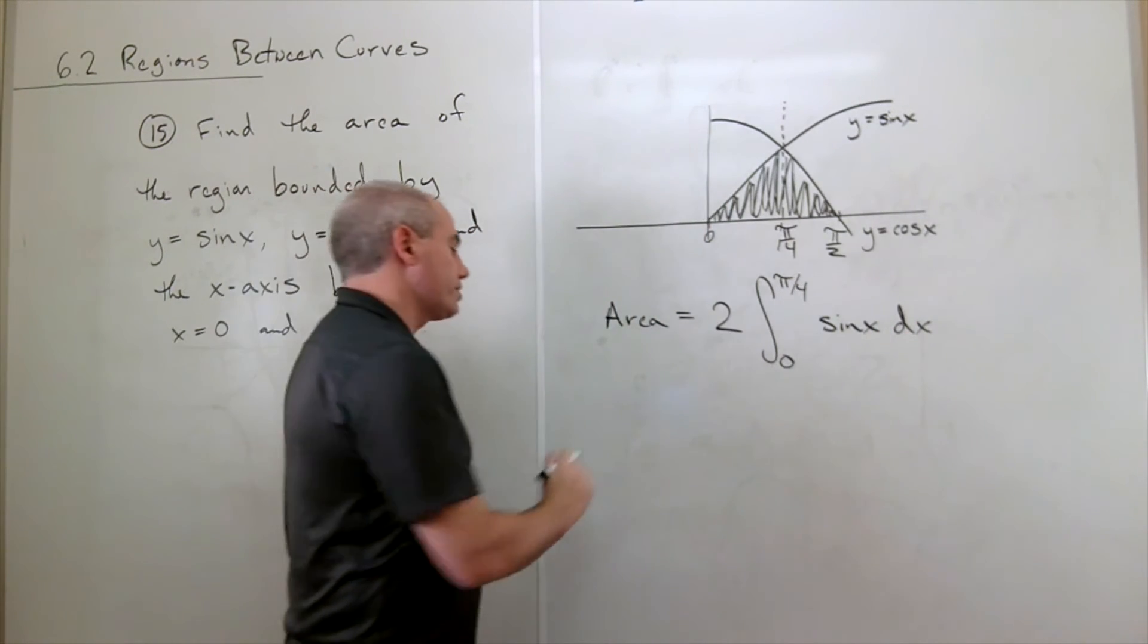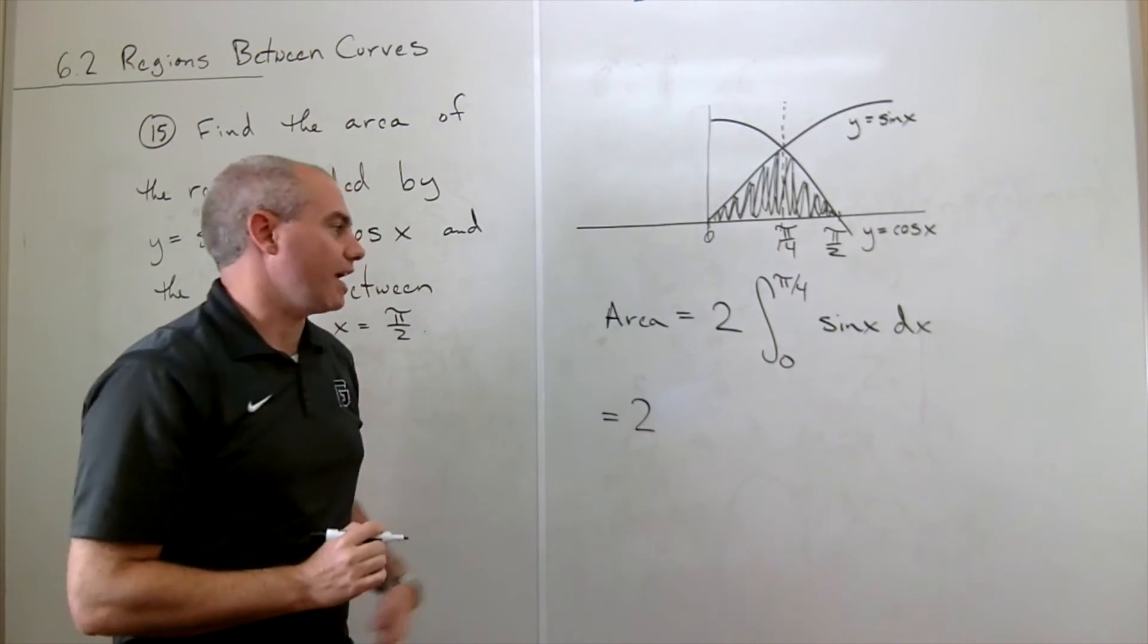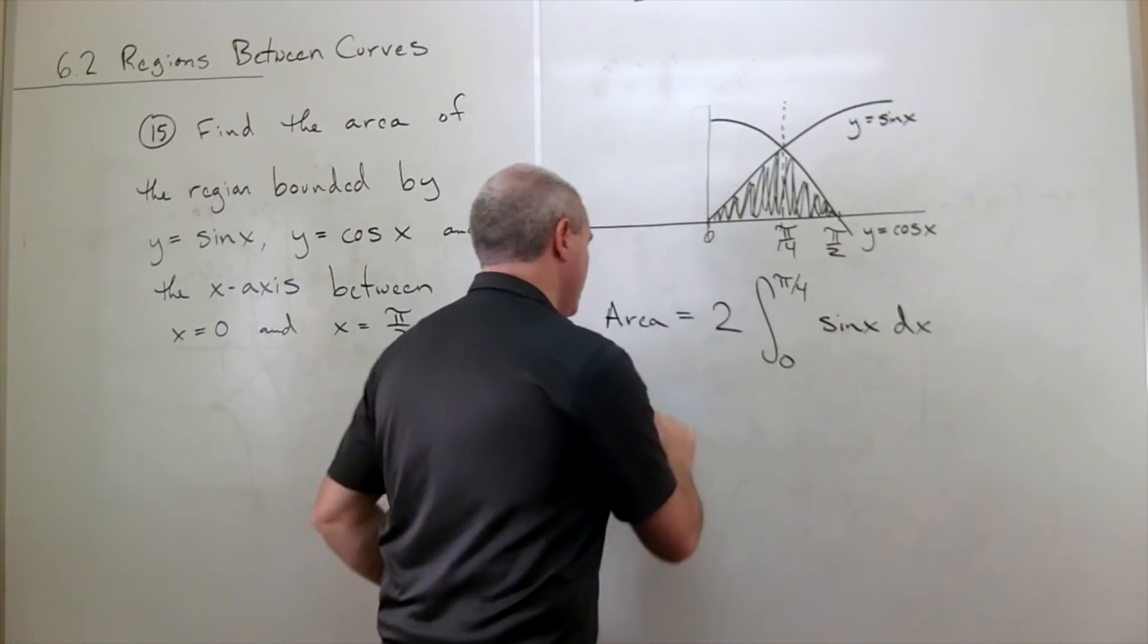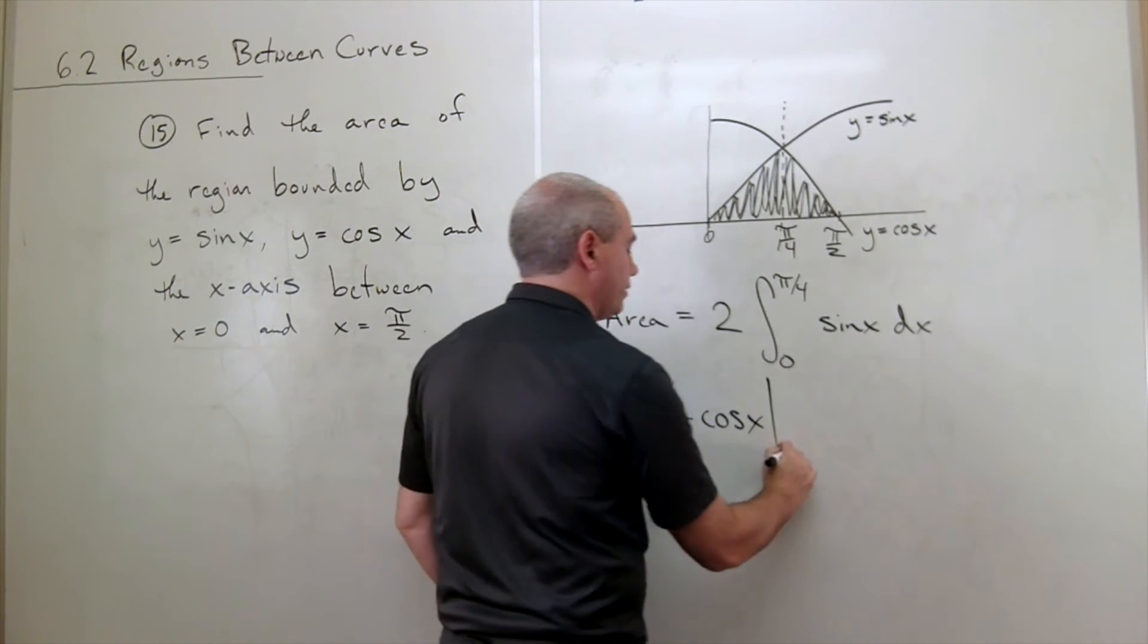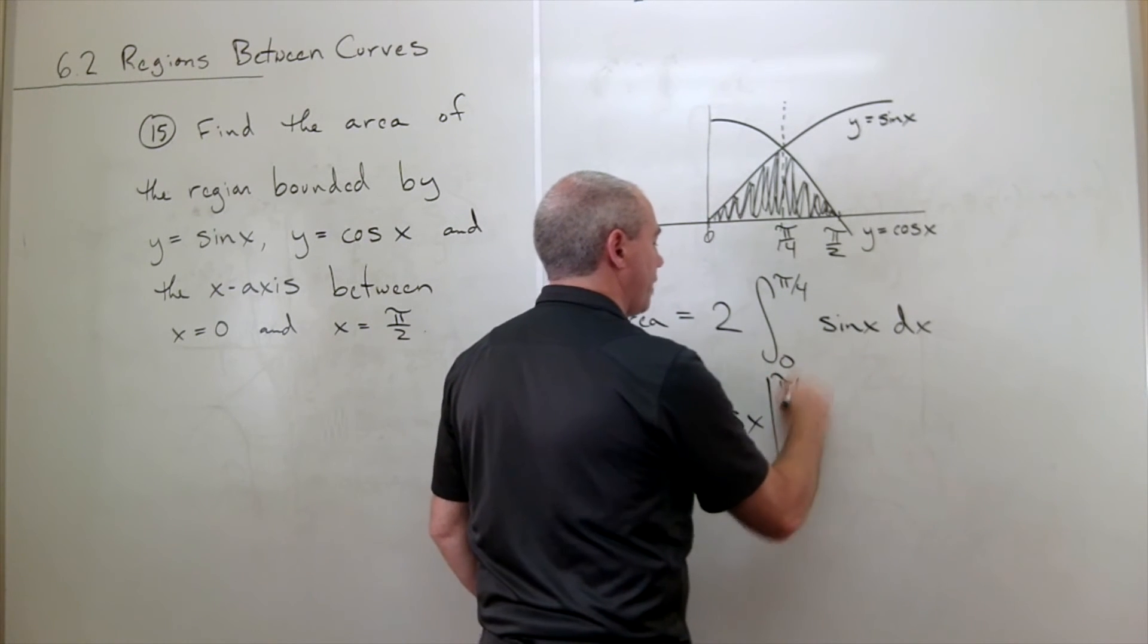Okay, so we have 2 times antiderivative of sine is negative cosine of x, evaluated from 0 to pi over 4.